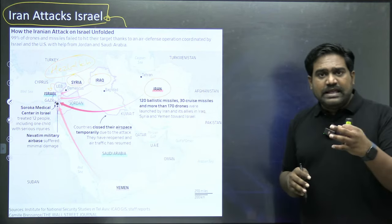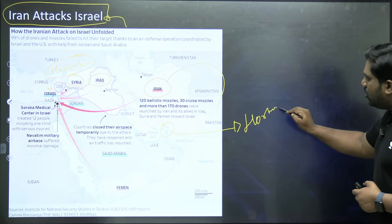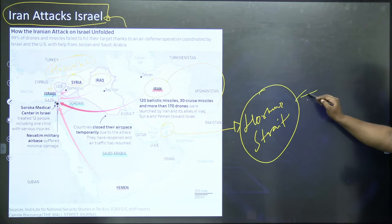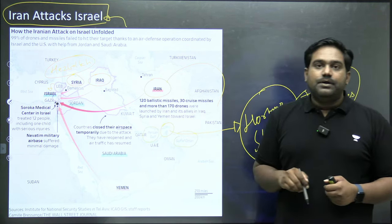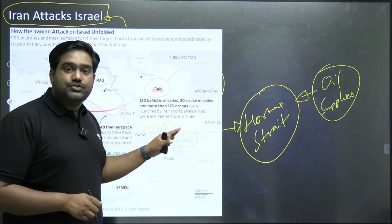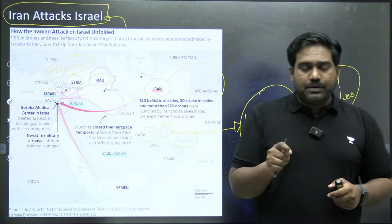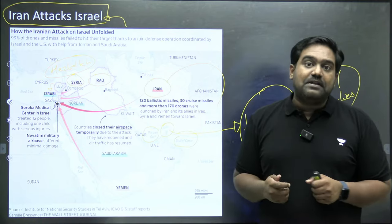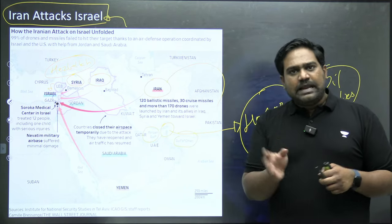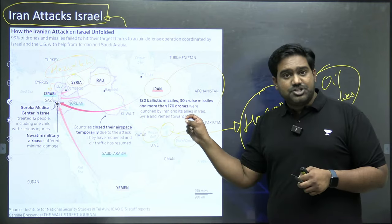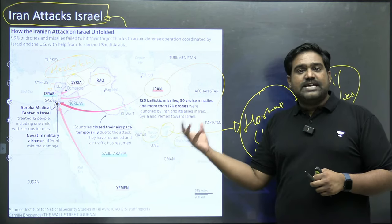The Hormuz Strait is another critical choke point for oil supplies, connecting the Gulf of Oman with the Persian Gulf. There were fears that Iran might blockade the Hormuz Strait, which could destabilize oil markets, but fortunately it hasn't done that as of now. Iran only seized a ship linked with Israel. But unfortunately, there is an Indian connection everywhere — 17 of the crew members of this ship captured by Iran are Indian nationals. Right now, India is negotiating with Iran to secure their safe release and bring them back to India.